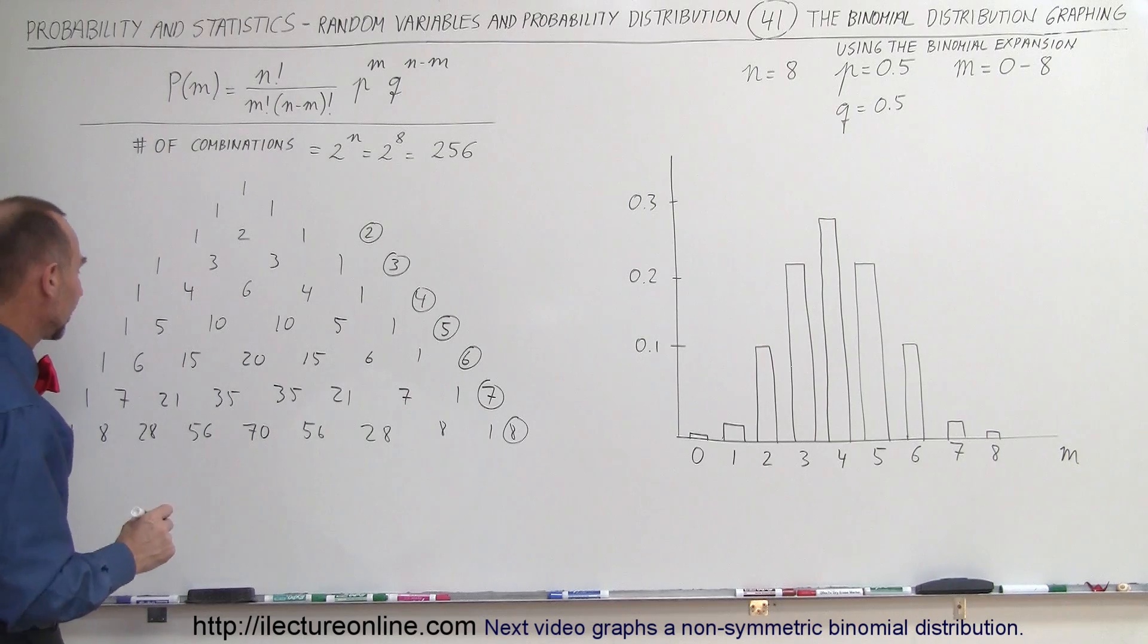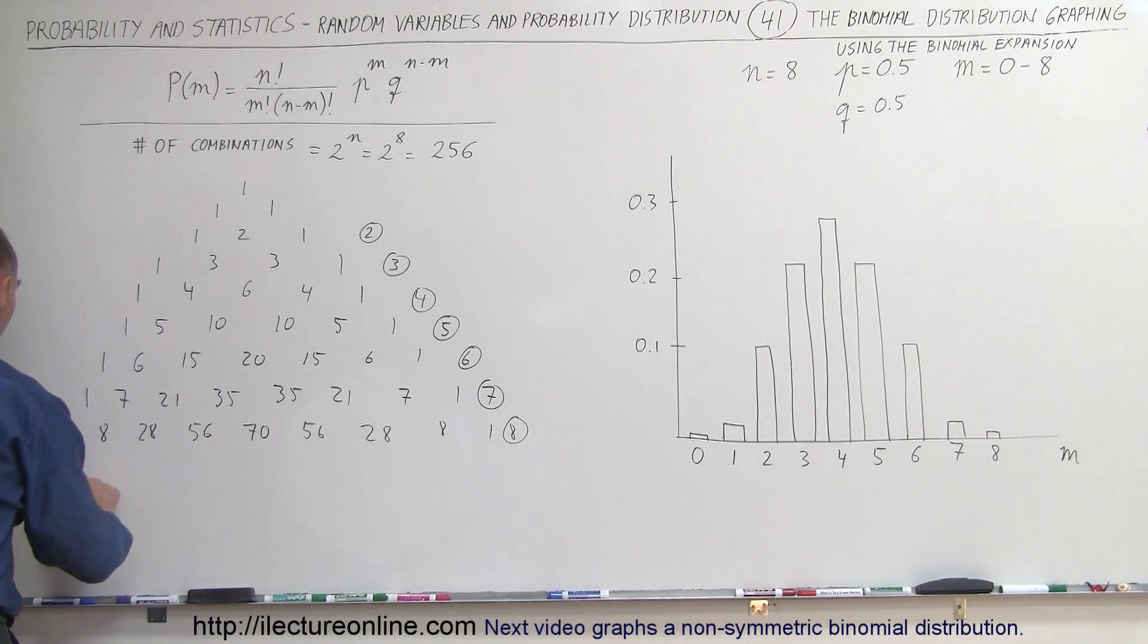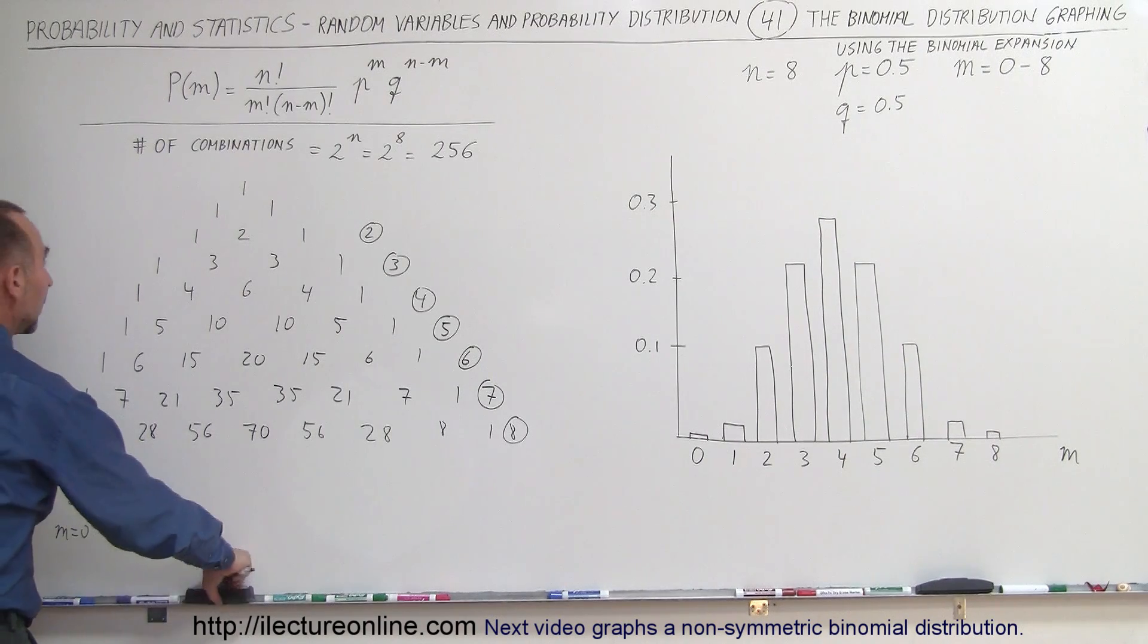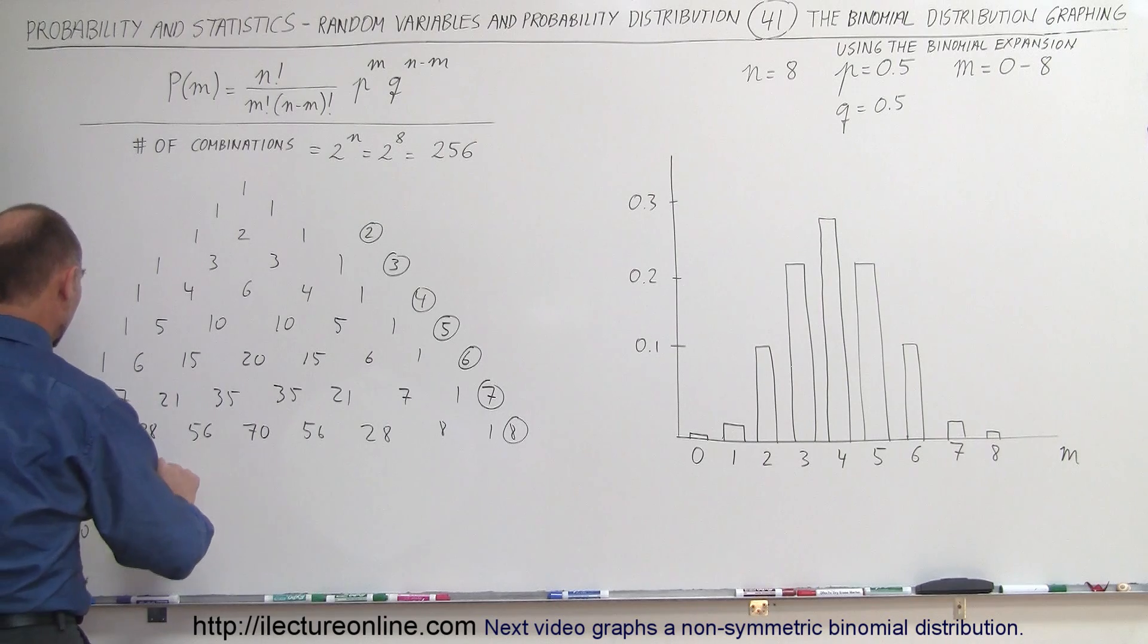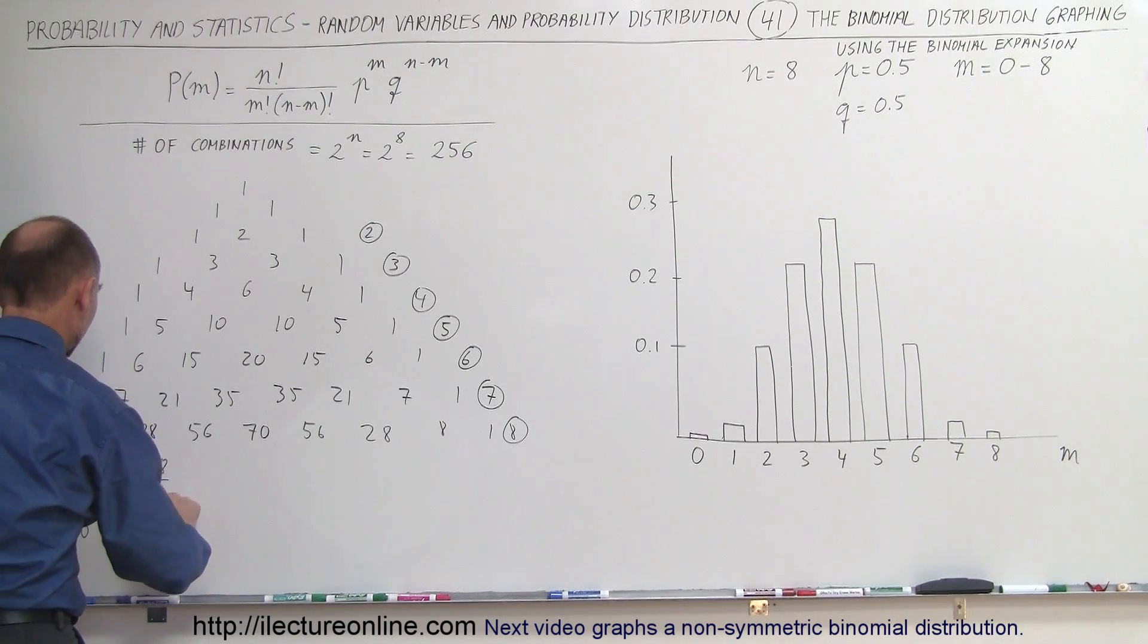Now, out of 256, that means 1 out of 256 would be for m equals 0. 8 out of 256, I forgot my 5. So 256. 8 divided by 256 is for m equals 1. 28 out of 256 is for m equals 2.